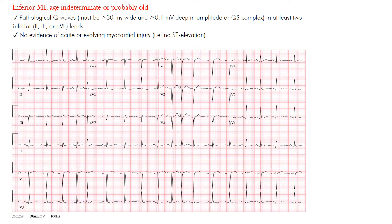Inferior MI, age indeterminate or probably old — we're not looking at something acute, but one we want to keep in mind and make sure is not a new change when the patient presents. If there's an old EKG available, we always want to look back and compare to the most recent. In this inferior MI, what we want to see are pathological Q waves.